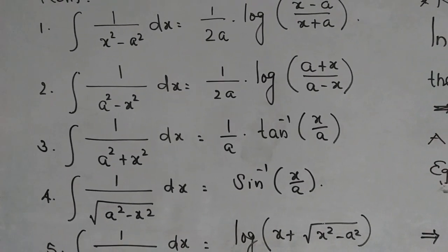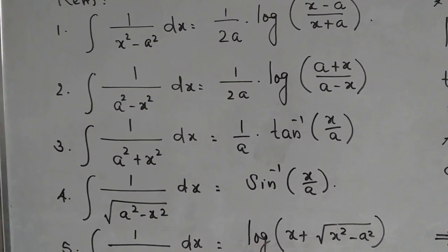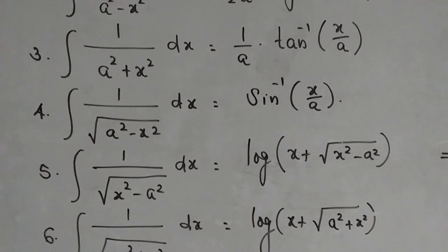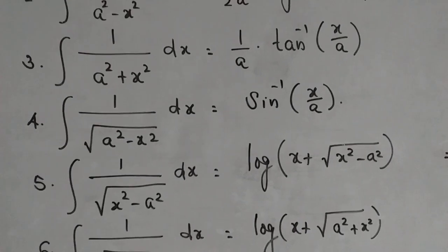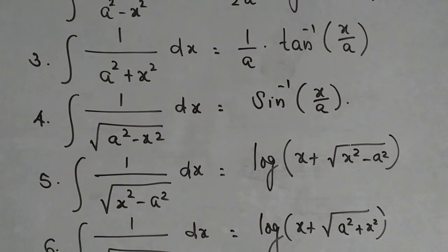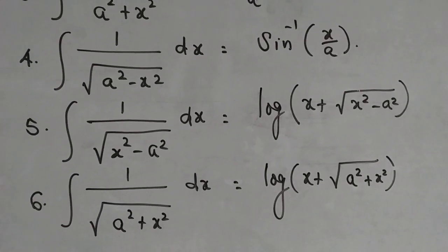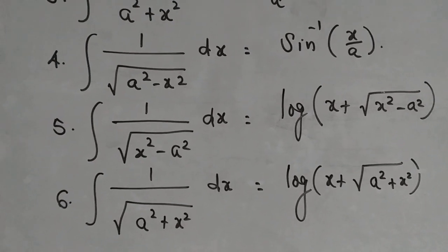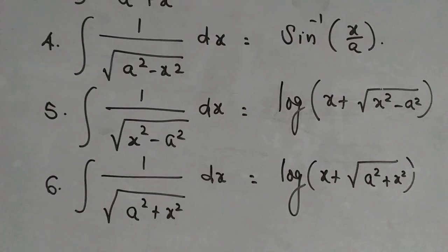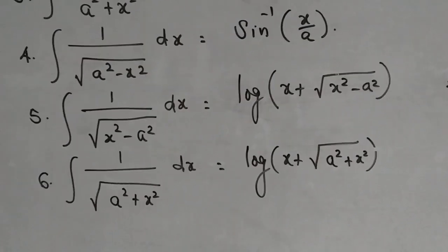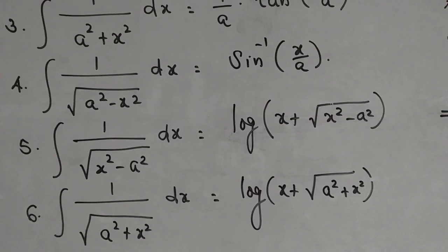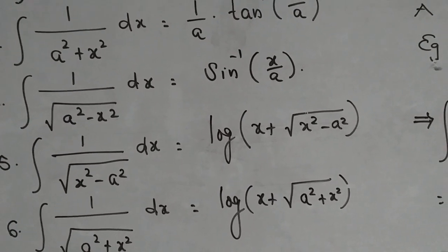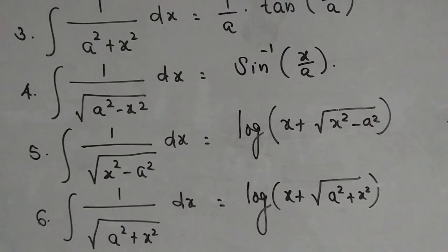The fourth one: integral of 1 divided by square root of a squared minus x squared dx is equal to sine inverse of x by a. And the last set contains two items, number 5 and number 6. In the denominator there's a radical sign: 1 divided by square root of x squared minus a squared, and 1 divided by square root of a squared plus x squared. The corresponding values are log of (x plus square root of x squared minus a squared) and log of (x plus square root of a squared plus x squared) respectively.